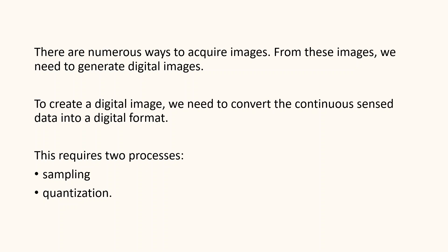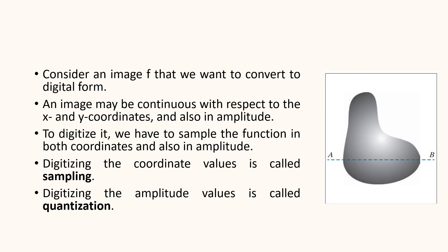Now let us see the basic concept in sampling and quantization. Consider the image given in the figure that is to be converted into digital form. An image may be continuous with respect to x and y coordinates and also in amplitude. To digitize it, we have to sample the function in both coordinates and also in amplitude. Digitizing the coordinate value is called sampling, and digitizing the amplitude value is called quantization.